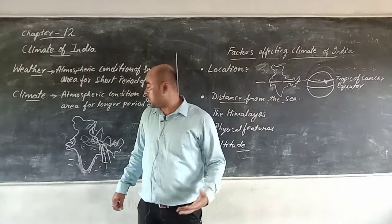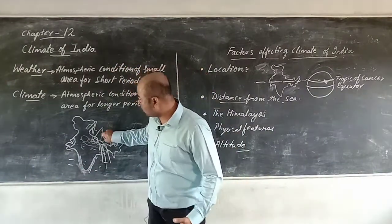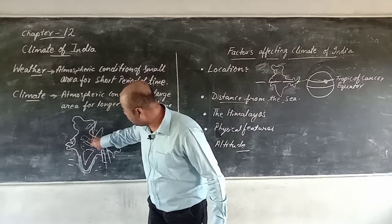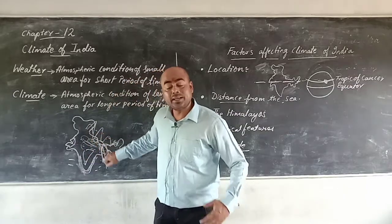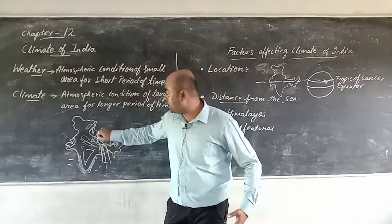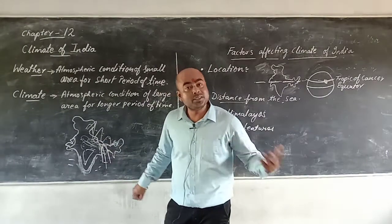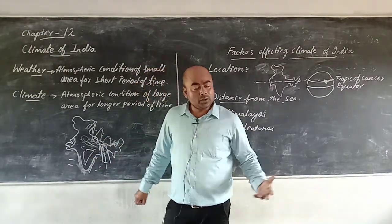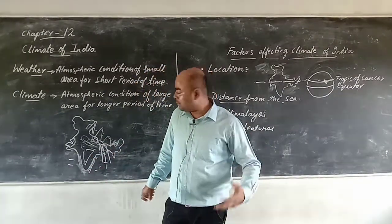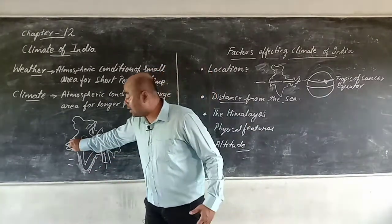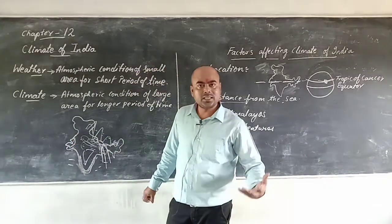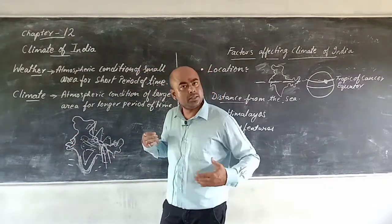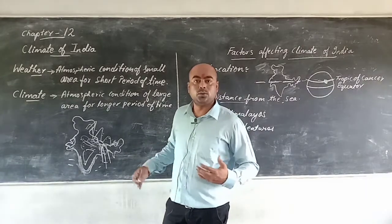Next is physical features. India is full of different physical features — mountains, deserts, plateaus, and plains. So they will have different types of climate: mountains will have a mountainous type of climate, plateaus will have a plateau type of climate, and deserts will have a desertic type of climate.